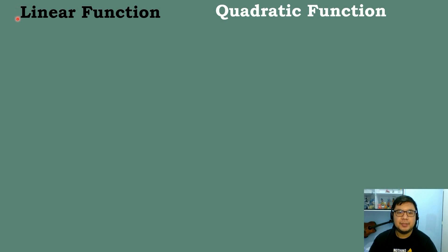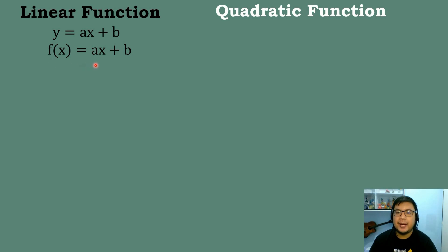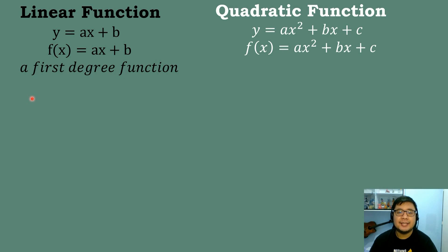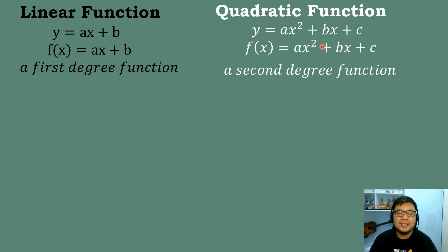Let's state the difference between the linear function and quadratic function. For the linear function, our equation will be y = ax + b or f(x) = ax + b. For the quadratic function, our equation will be y = ax² + bx + c or f(x) = ax² + bx + c. The linear function has an exponent of 1 — it has a first degree exponent. For the quadratic function, it is a second degree function, meaning its exponent is raised to the second power.